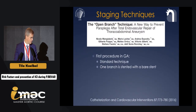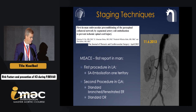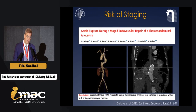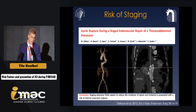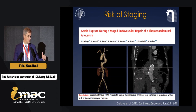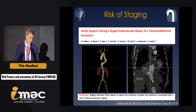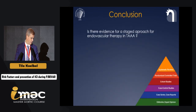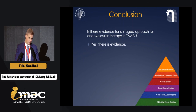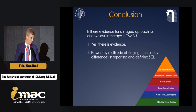Staging, which has become so popular, also includes some risks: some patients may not complete the repair because of complications during the first stage, and patients may rupture, as described in a report by Stefano Longo's group in 2015. In conclusion, is there evidence for a staged approach in thoracoabdominal repair to prevent spinal cord ischemia? The answer is yes, there is evidence — but the quality of evidence is relatively low.